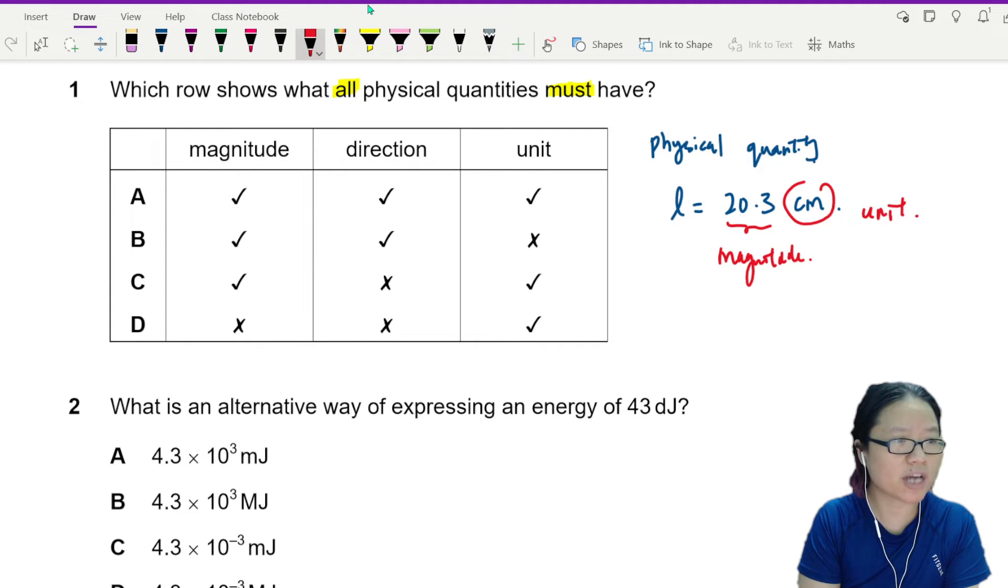But direction is optional, so the answer is C. So only vectors have direction, so I'll just write here. But only vectors have direction.